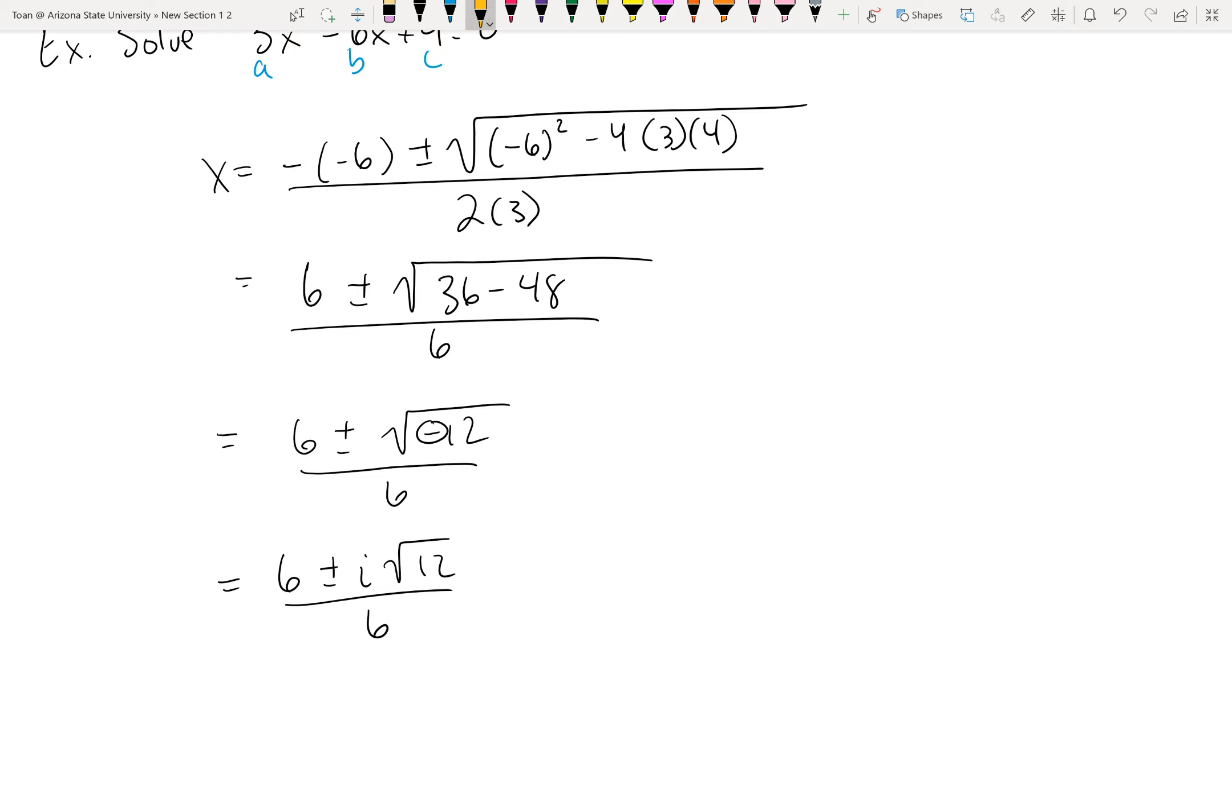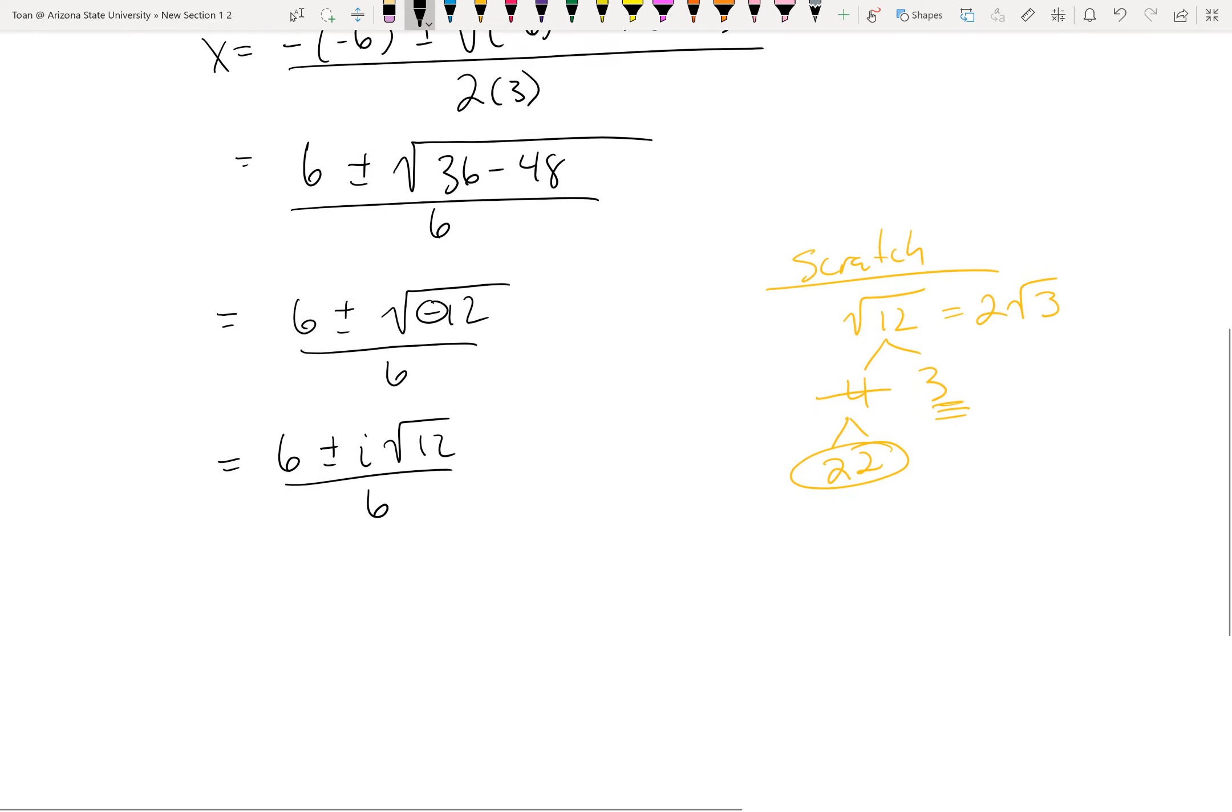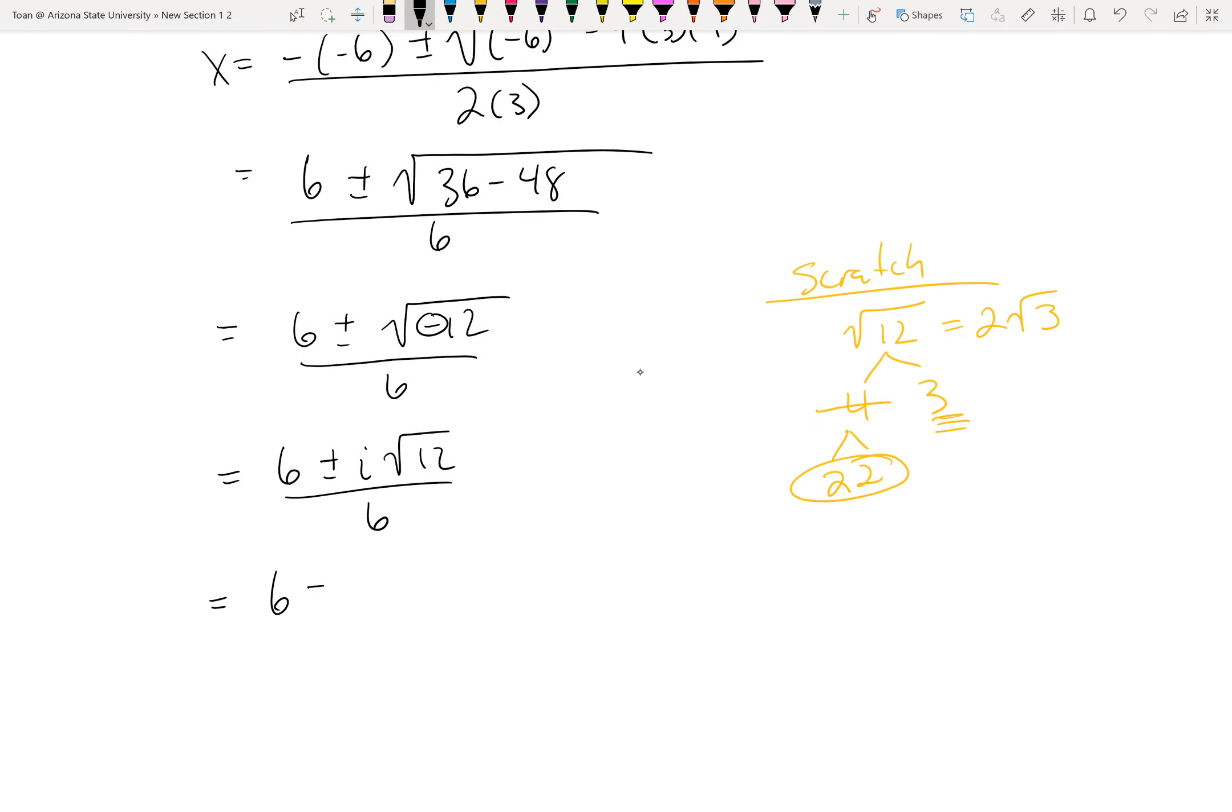Now all we have to do is simplify √12. So you either do it in your head or you can use a factor tree. So 12 is 4 and 3. 4 is 2 and 2. I look for doubles, which I have a 2 here, and then I have this 3 left over. So he stays on the inside. So √12 is simply 2√3. So this is 6 ± 2i√3 over 6.